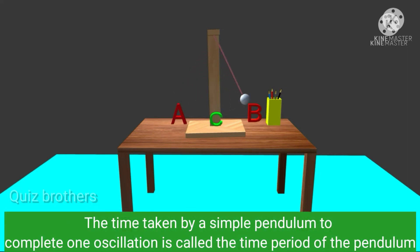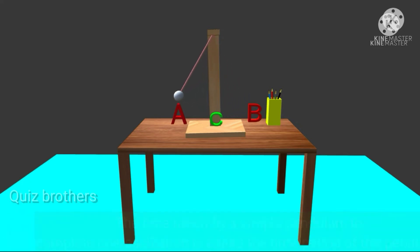The time taken by a simple pendulum to complete one oscillation is called the time period of the pendulum.